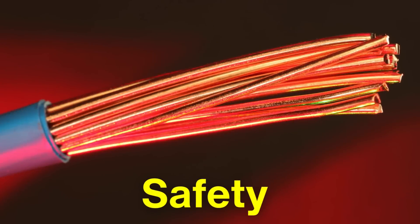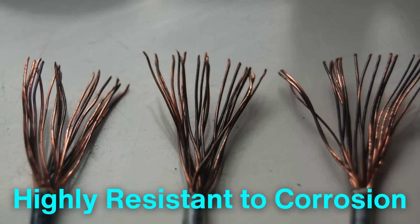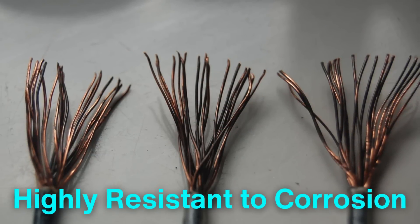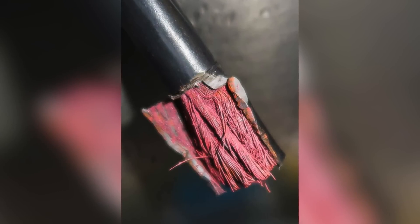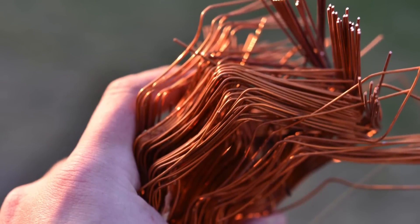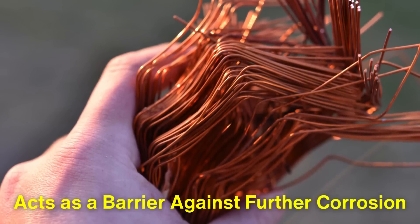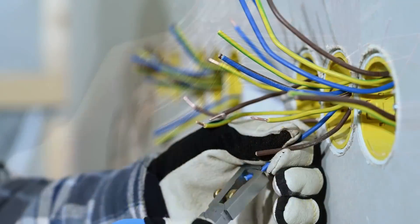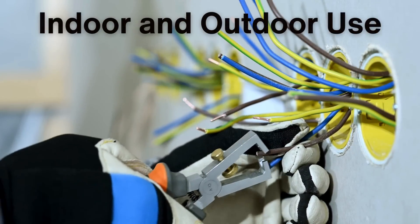Safety is another critical reason copper is favored for wiring. Copper is highly resistant to corrosion, a property that ensures long-term performance and safety. Unlike other metals that might corrode or oxidize over time, copper develops a protective layer of copper oxide when exposed to air, which acts as a barrier against further corrosion.